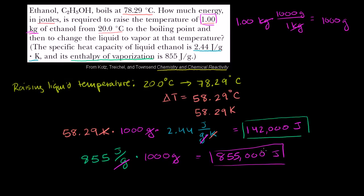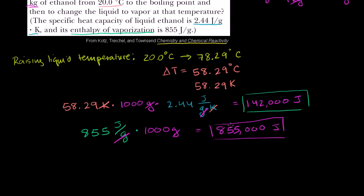If we want to know the total amount of energy, let's add this up. 855,000 plus 142,000. 800 plus 100 is 900. It's 900,000. 50 plus 40 is 90. 5 plus 2 is 7, so it's 997,000 joules, or 997 kilojoules, or almost 1 megajoule. But that's what it'll take for us to vaporize that 1 kilogram of ethanol.